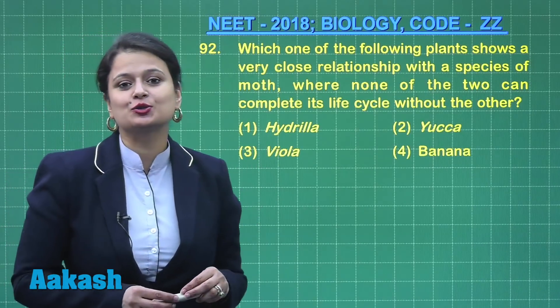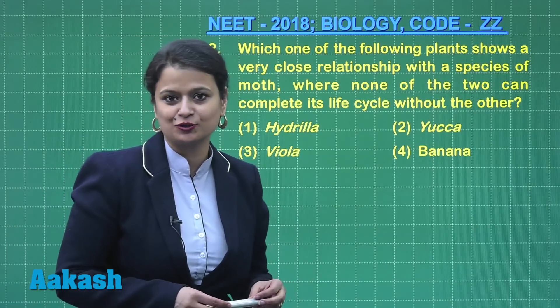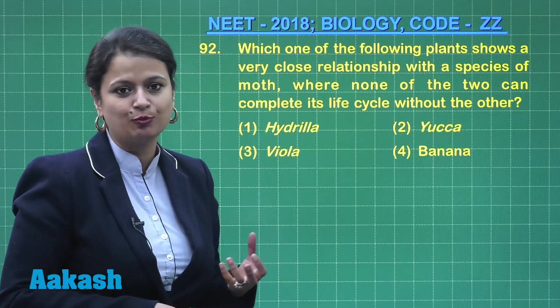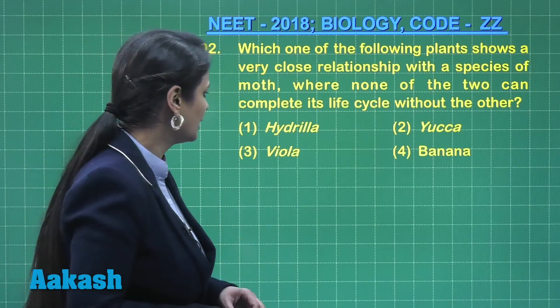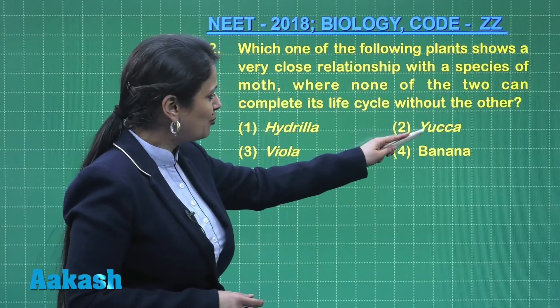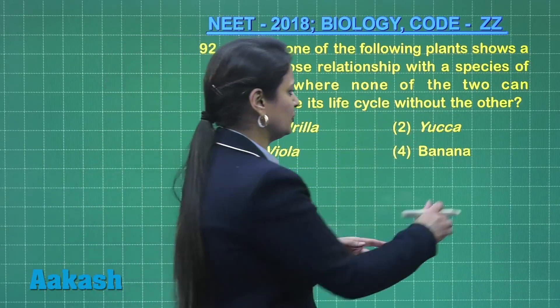Viola forms cleistogamous flowers. In the case of cleistogamous flowers, there is presence of self-pollination. Now, in Yucca, pollination is done by moth.